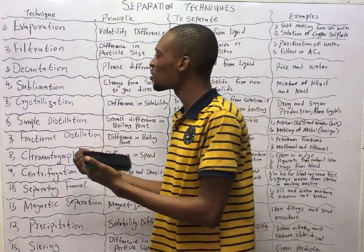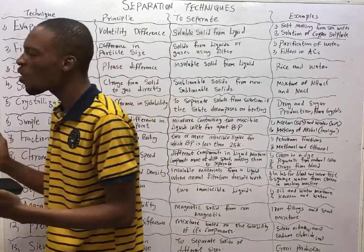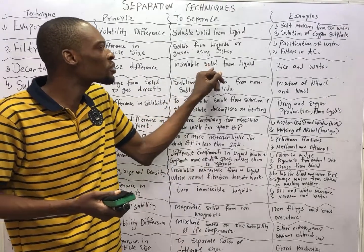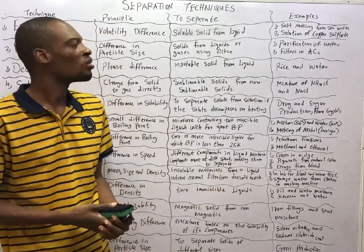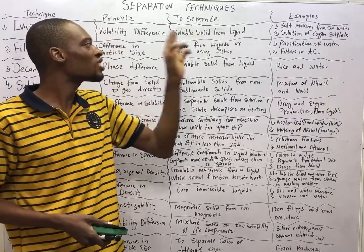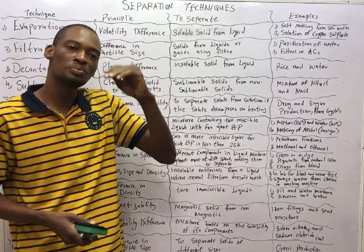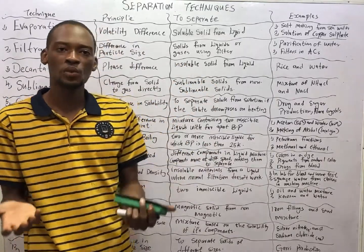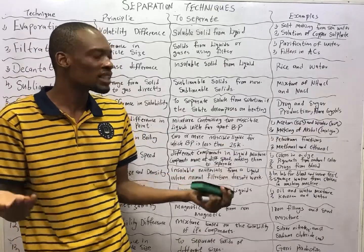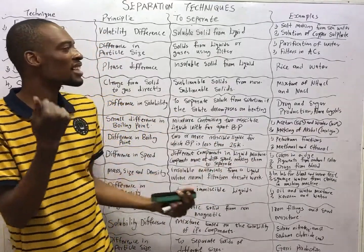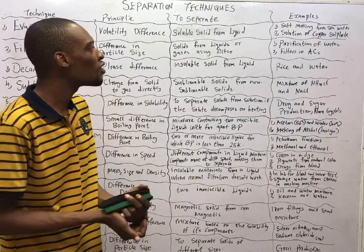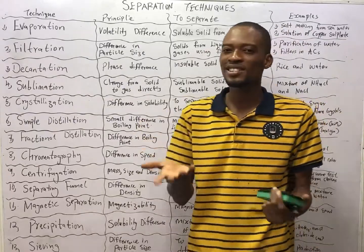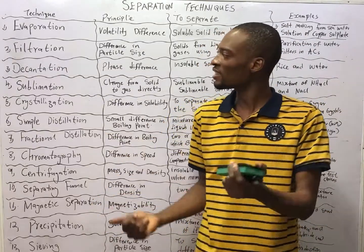Decantation works based on the principle of phase difference, and it is used to separate insoluble solid from liquid. In evaporation, we said soluble solid from liquid; but in decantation, the solid does not dissolve in the liquid. So when you have a solid that doesn't dissolve in water or any liquid, you can use decantation to separate it. An example is rice and water — rice doesn't dissolve in water, so you use decantation.